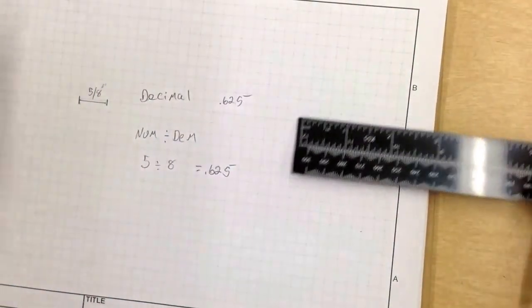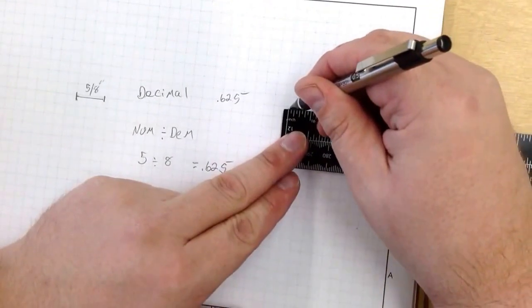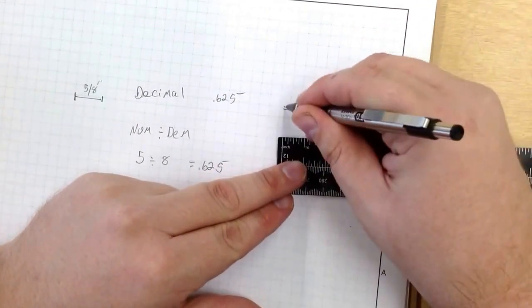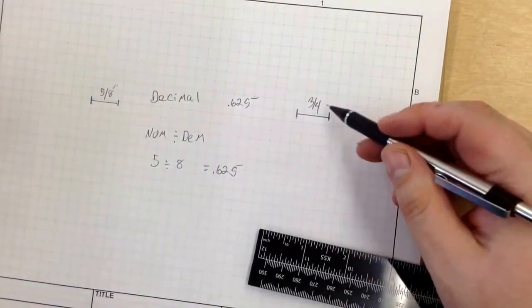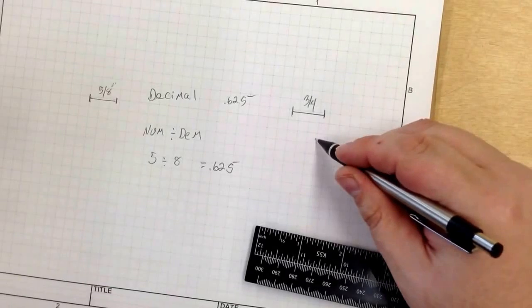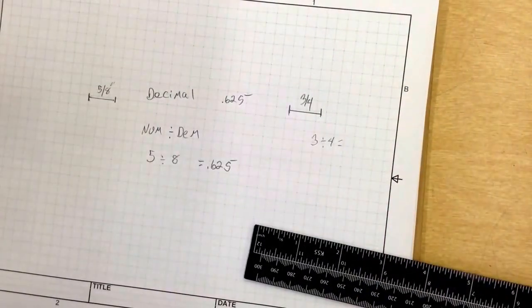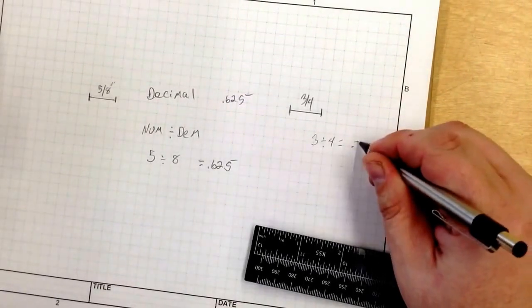Let's do the same thing for 3 fourths of an inch. I'm going to draw a line 3 fourths. To do this accurately I take 3 divided by 4, which equals .75.